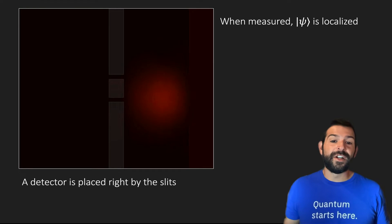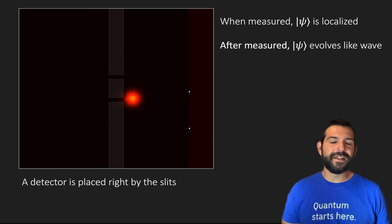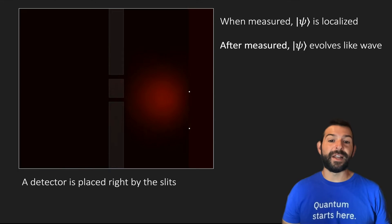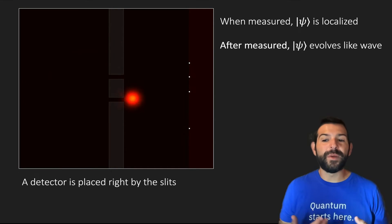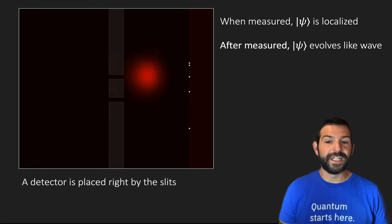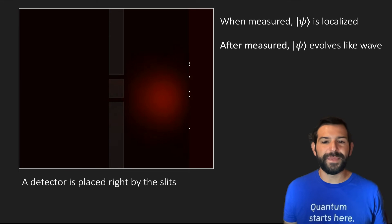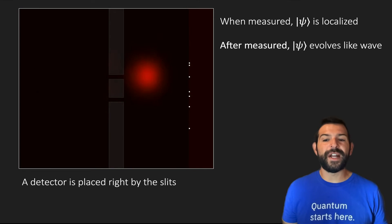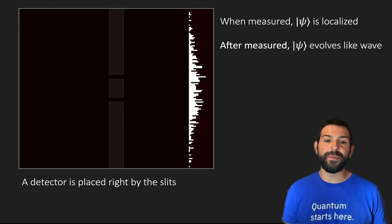However, right after the measurement takes place, the particle immediately starts behaving like a wave again, making its way to the screen. What we observe after running the experiment several times is that the fringe pattern on the screen disappears, because we no longer have two waves interfering with each other, but only one wave traveling from either the top slit or the bottom slit.